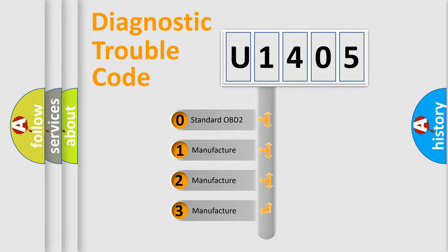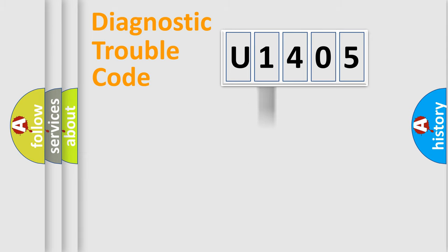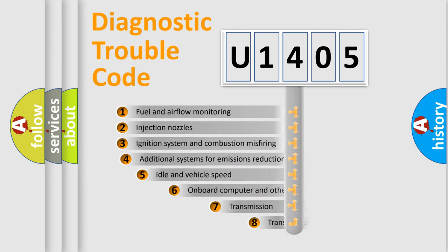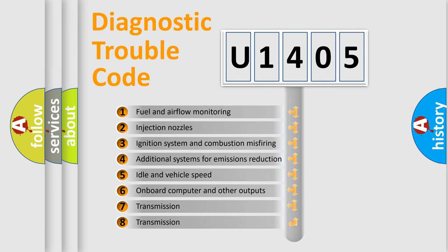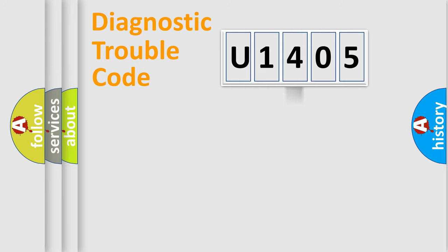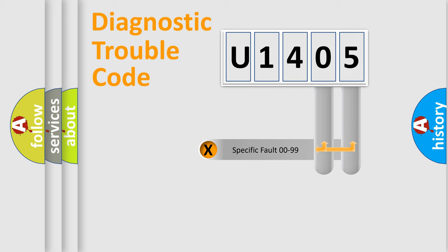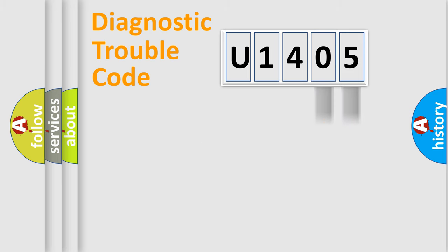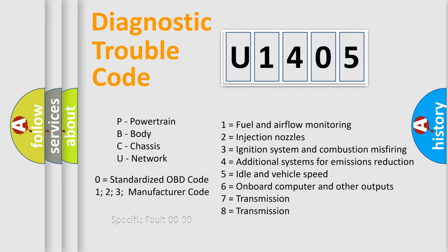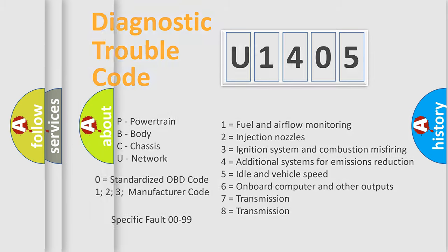If the second character is expressed as zero, it is a standardized error. In the case of numbers 1, 2, or 3, it is a more specific expression of a car-specific error. The third character specifies a subset of errors. This distribution is valid only for the standardized DTC code. Only the last two characters define the specific fault of the group, and this division is valid only if the second character is expressed by the number zero.